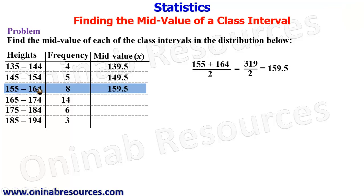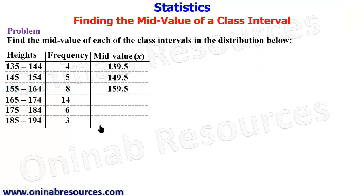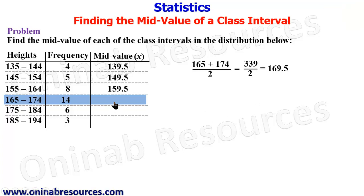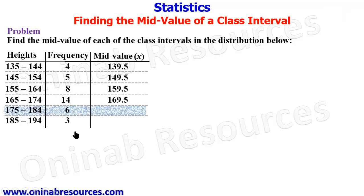Going to the fourth class interval, we have 165 to 174. We add the lower class interval to the upper class interval and divide by 2. The sum gives 339, divided by 2, and that gives 169.5 as the mid value of the class interval 165 to 174.